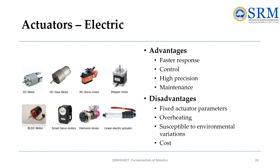Electric actuators include DC motors, stepper motors, servo motors, and harmonic drives — the latter are most commonly used in industrial robots. Advantages include fast response, good control, high precision, and easy maintenance. Disadvantages include fixed actuator parameters, overheating due to power demands, high cost, and susceptibility to environmental variations.